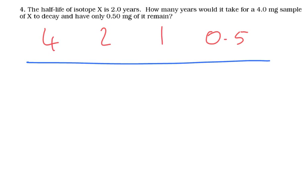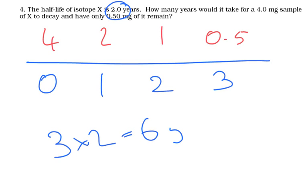And then after a third half-life, okay, so here we've got the first half-life, second half-life, third half-life. So it will take three half-lives. Now, each half-life is worth two years. So three times by two is going to give us six years. That's our answer.